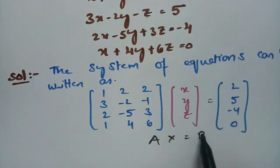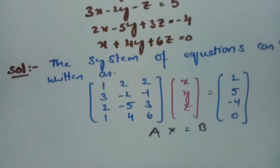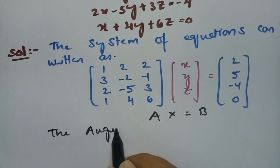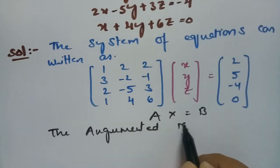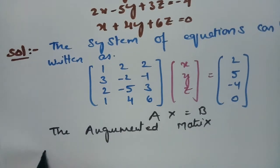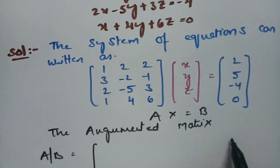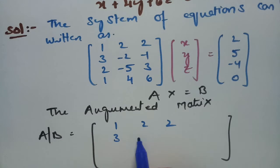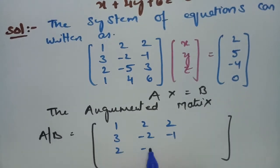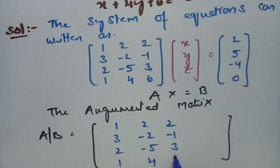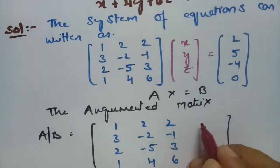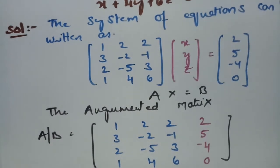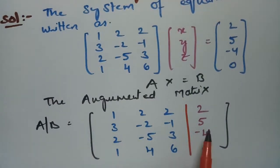The column matrix is B and the coefficient matrix is A. First of all, we have to find the augmented matrix. The augmented matrix A|B can be written as: row 1 is 1, 2, 2 | 3; row 2 is 3, minus 2, minus 1 | 2, minus 5, 3; row 3 is 1, 4, 6 | minus 4, and 0. We have to separate A and B — this is the A|B matrix.